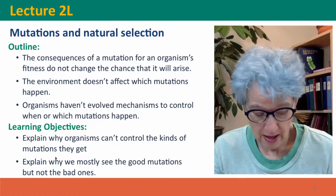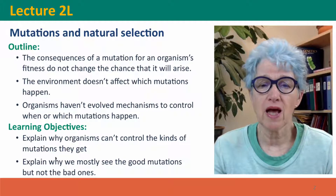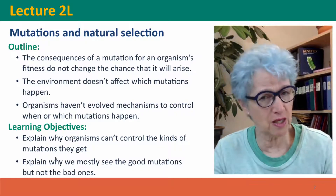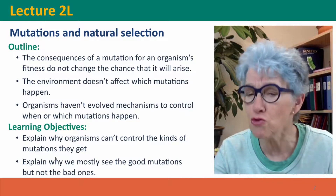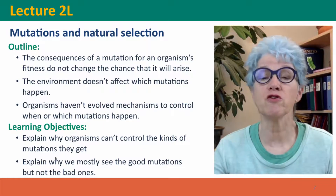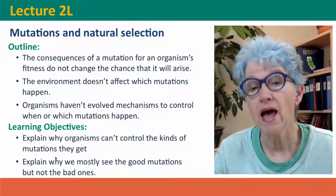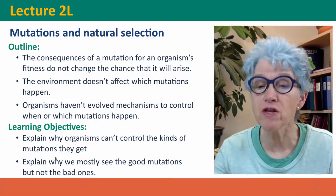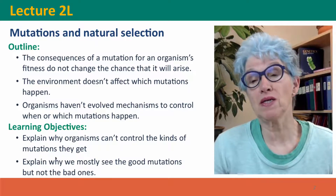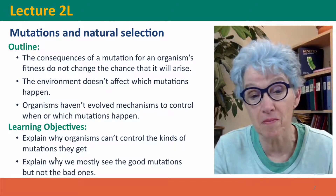We'll talk about clearing up some misconceptions: that the chances a mutation is going to benefit an organism don't affect the chance that the mutation will arise, the environment doesn't affect which mutations arise, and organisms have no default mechanism to control what kinds of mutations they get or when they get them.